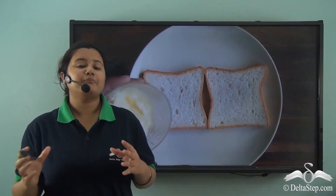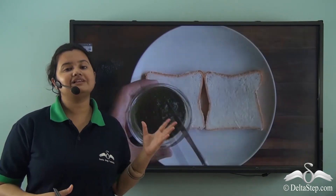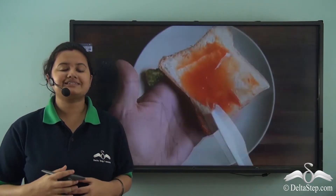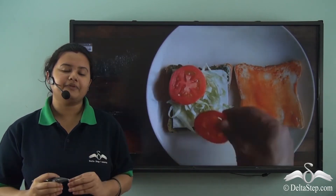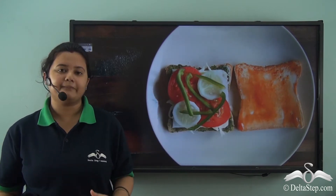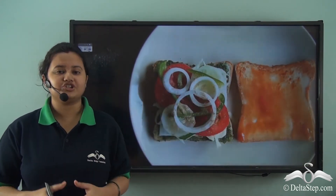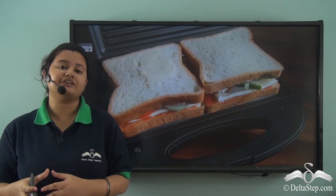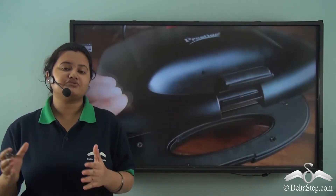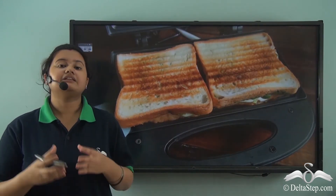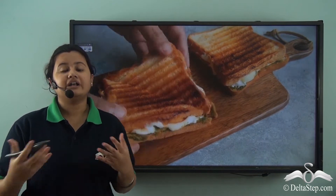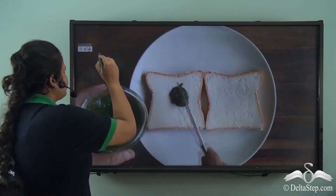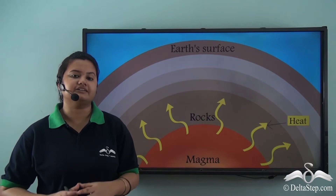Before discussing about the type of rock, let us see how a grilled sandwich is prepared. You arrange the slices of bread, veggies, and cheese layer over layer, club them, and put them in a grilling machine. Due to the heat and pressure of the grilling machine, the cheese melts and the veggies and raw bread get cooked. Similarly, the rocks found on the earth's surface transform into new ones due to heat and pressure.